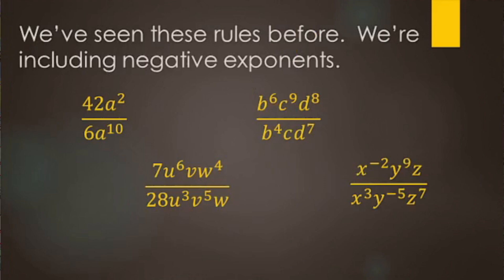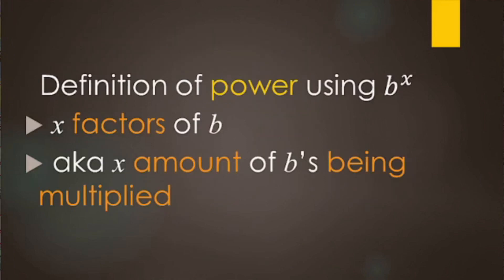Here are the four examples we're going to do. Before we get into it, let's review what a power is. So here we have b to the x. This exponent is telling you how many of the b's are being multiplied — x number of factors of b being multiplied.